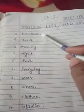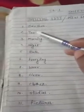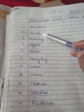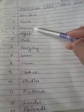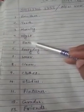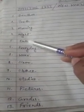Brushes. Brushes means brush kerna, daatun kerna. Teeth. Teeth means daate, daat. Bohot saray daat kya kehte hai? Teeth. Morning. Morning means subah. Night. Night means raat. Bath. Bath means nahana.